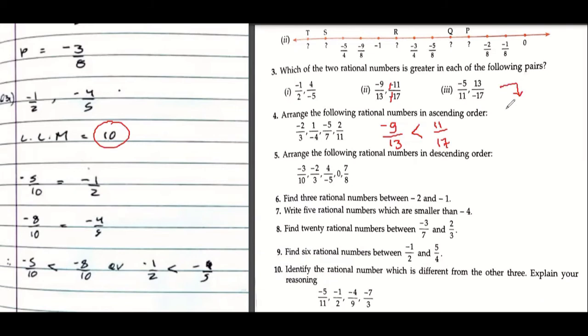What about this? Here we have -5 and -17. Cross multiplying, it becomes 85 and 143. Which one is greater? 143. So that means 13/-17 is greater.